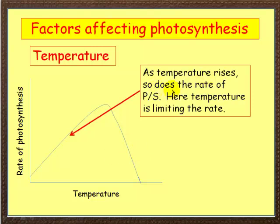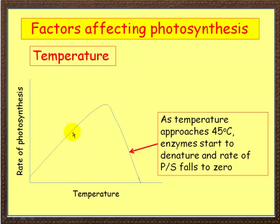As the temperature rises, so does the rate of photosynthesis. Now at this part of the graph, temperature is the limiting factor. As the temperature approaches about 45 degrees Celsius, the enzymes inside the plant start to denature. Denature means to break apart, to stop functioning properly, and the rate of photosynthesis falls to zero.